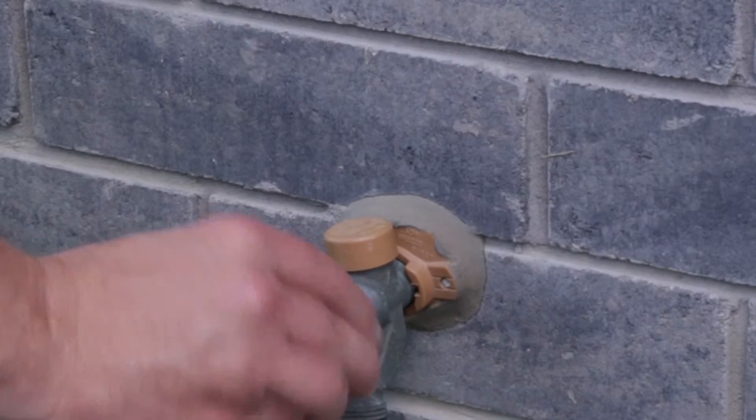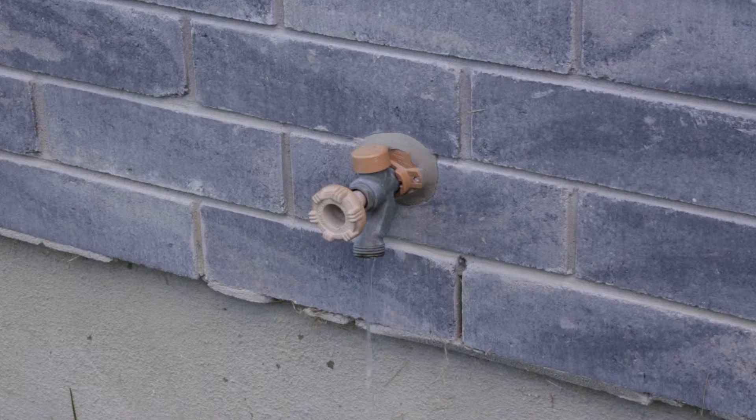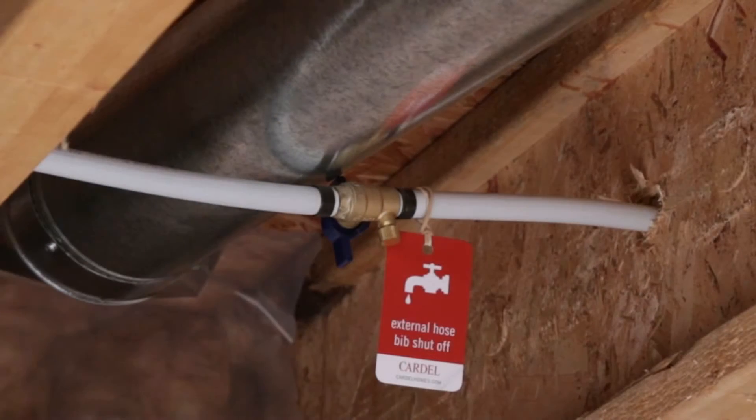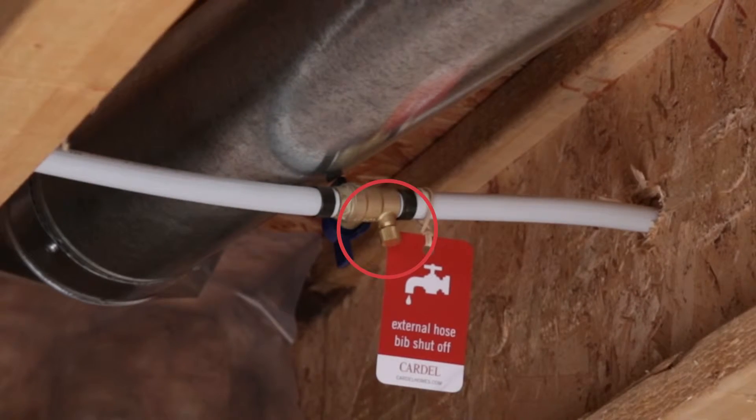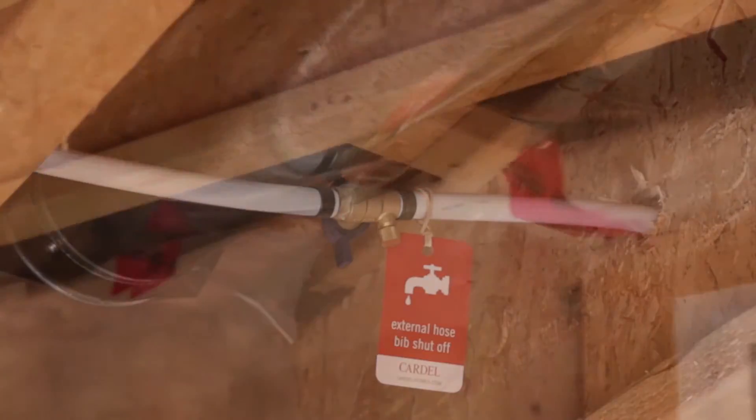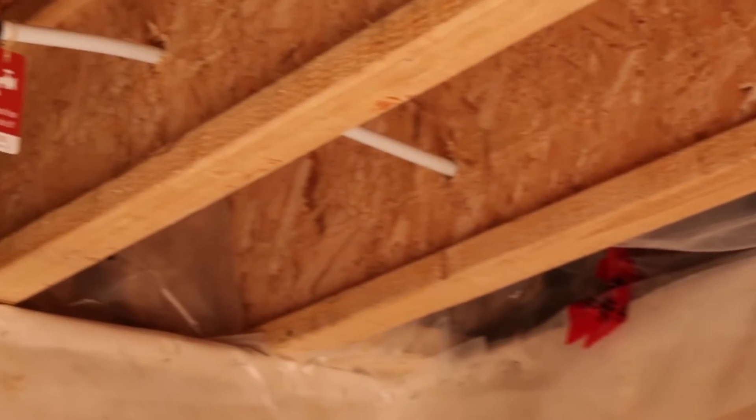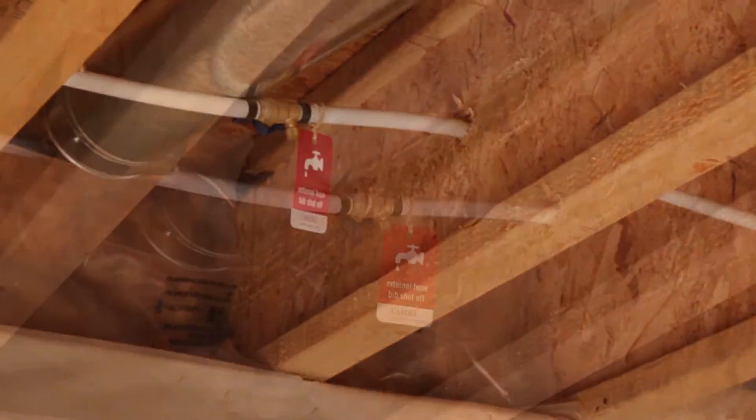Once the valve is closed, open the tap to drain the line. To ensure the line is completely drained, remove the drain port cap. Once the line is empty, replace the drain port cap.